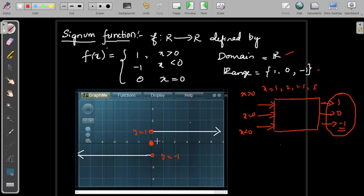This is y equal to minus 1. For all positive values of x, on the positive x-axis, value of y equals 1. For all negative values of x, value of y equals minus 1.